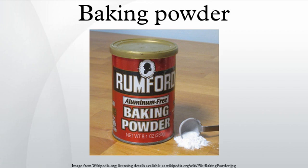Double-acting baking powders work in two phases: once when cold, and once when hot. Common low-temperature acid salts include cream of tartar and monocalcium phosphate. High-temperature acid salts include sodium aluminium sulfate, sodium aluminum phosphate, and sodium acid pyrophosphate.